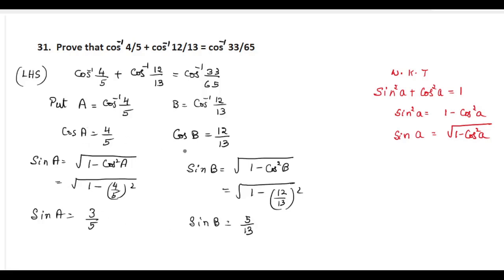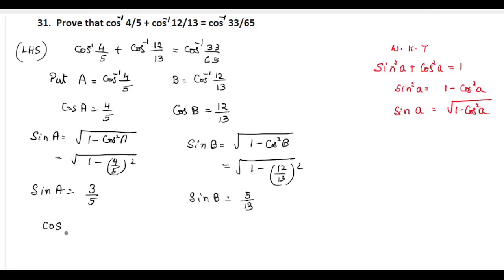So now we have cos A, cos B, sin A, sin B. We know the trigonometric formula cos A plus B equal to cos A cos B minus sin A sin B.